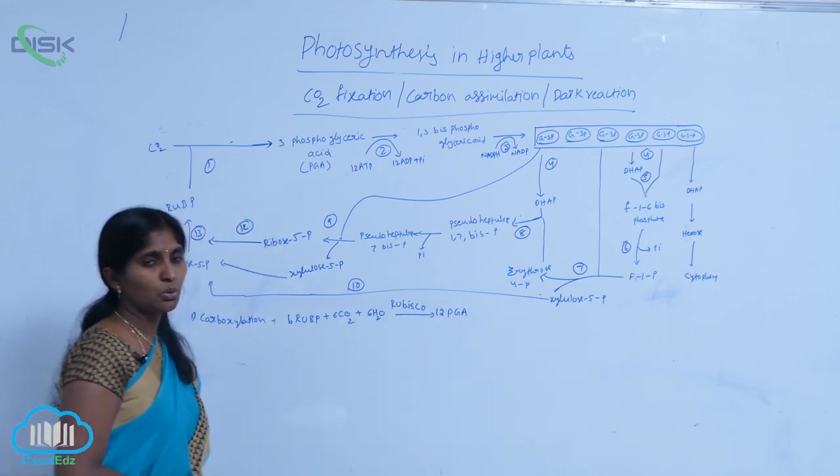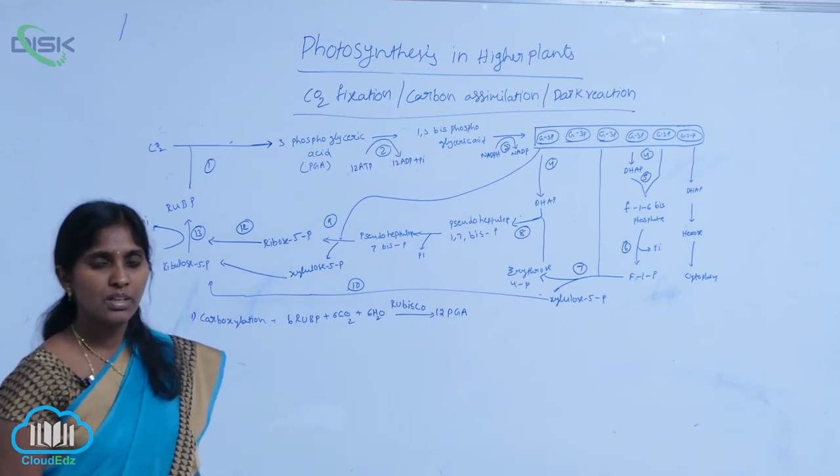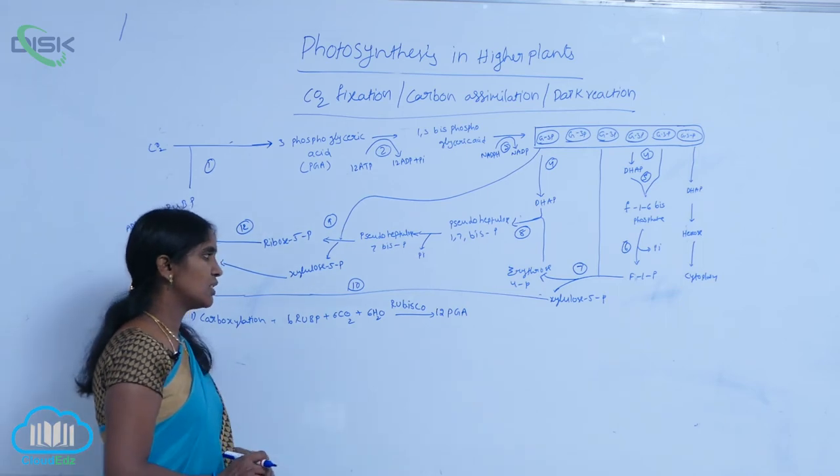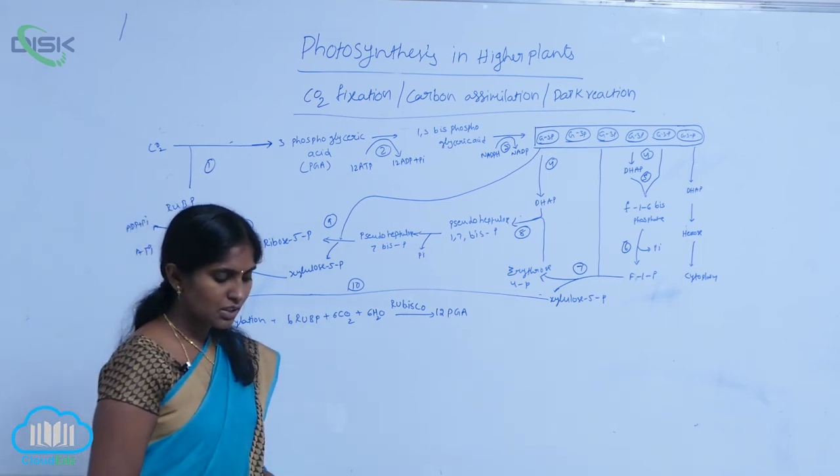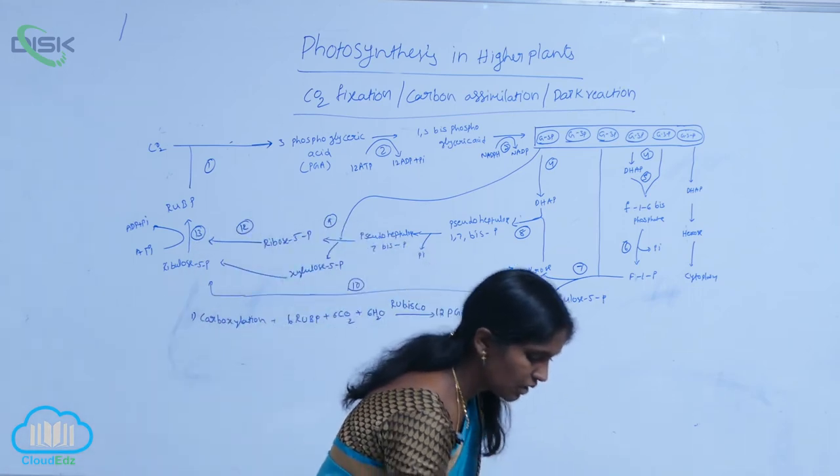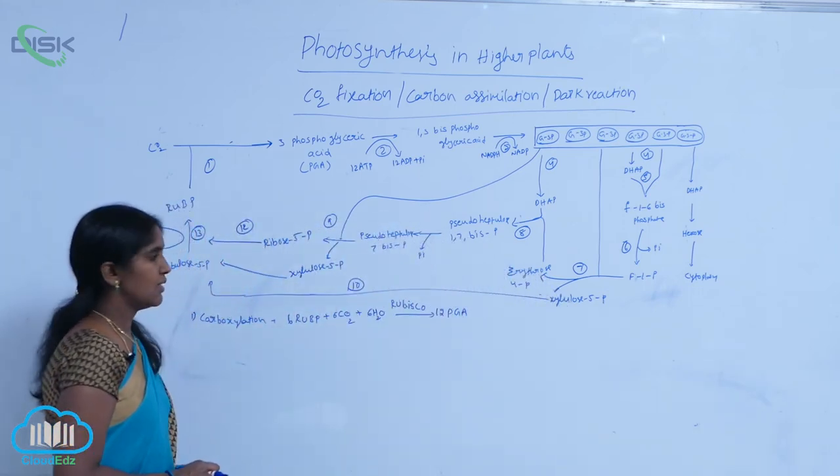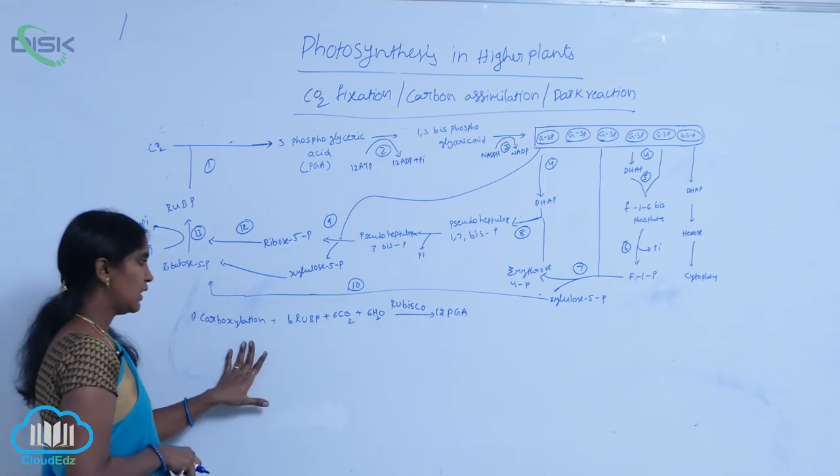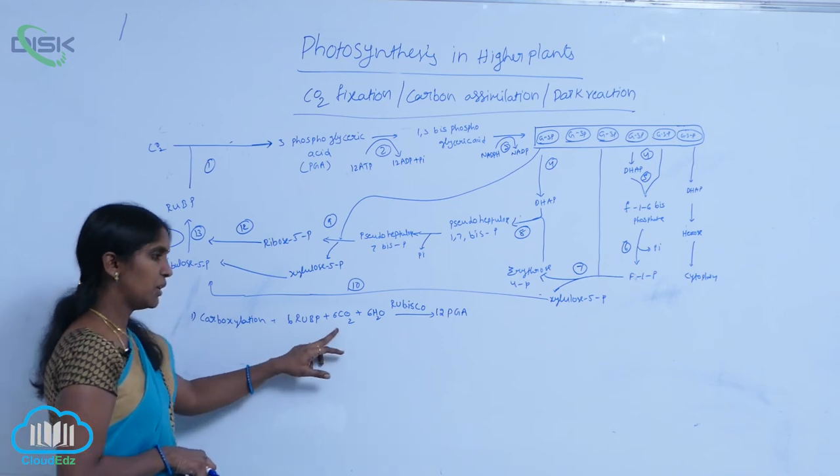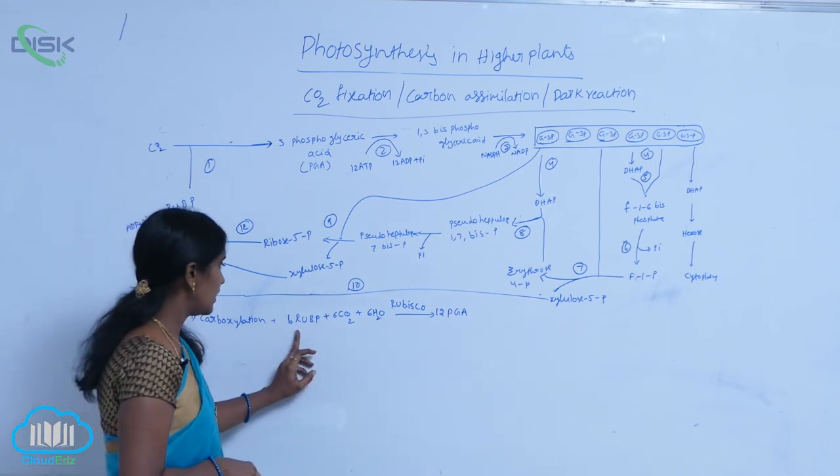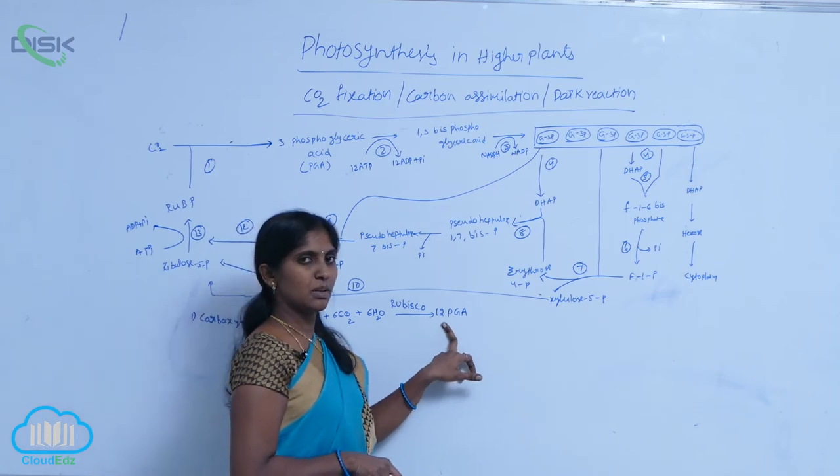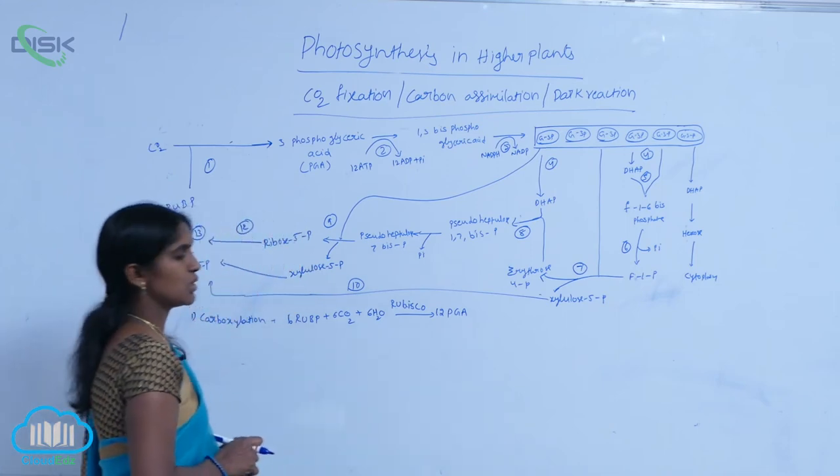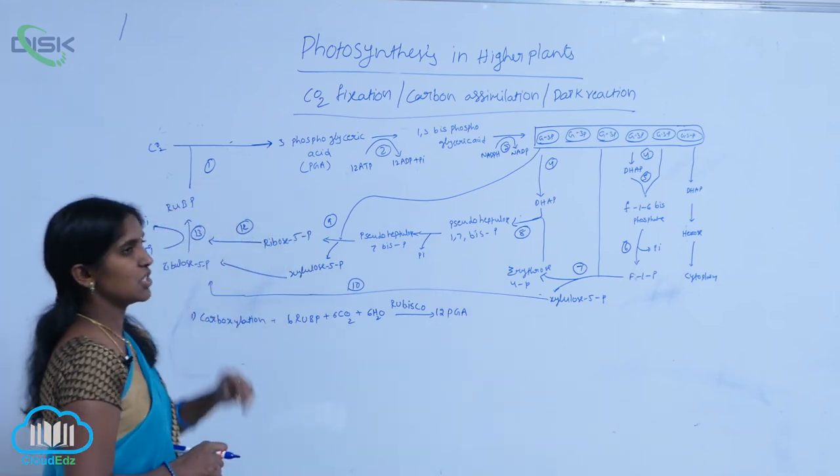It is said as RUBP carboxylase or oxygenase. So, it shows the two reactions. One is carboxylation, another one is oxygenation. That is called as RUBP decarboxylase or RUBP oxygenase. That is why it is RUBISCO. So, carboxylation reaction carried here. The carbon dioxide is fixed with RUBP to produce the first stable compound that is PGA. That reaction is mediated by RUBP. So, the first reaction is completed.